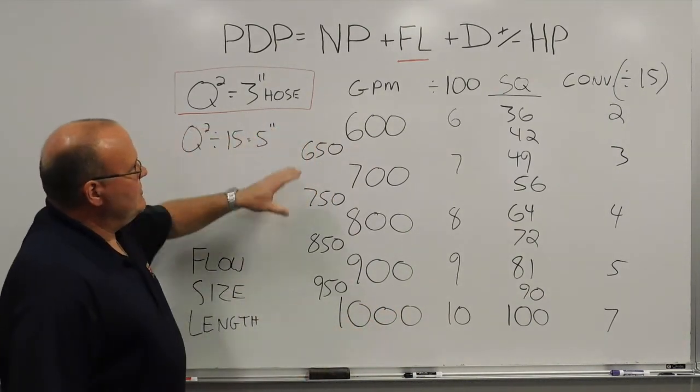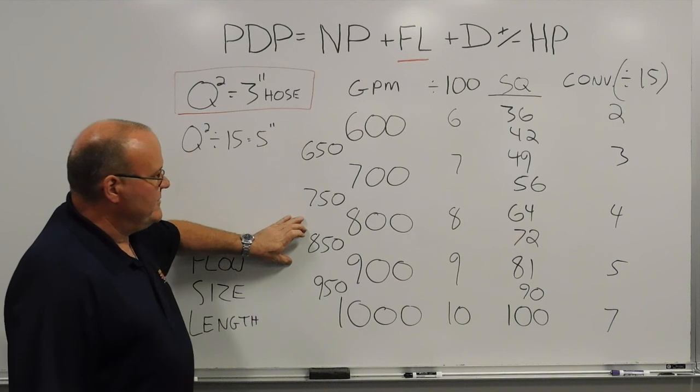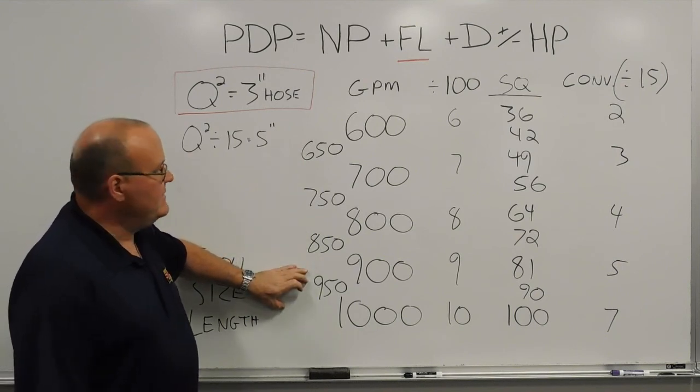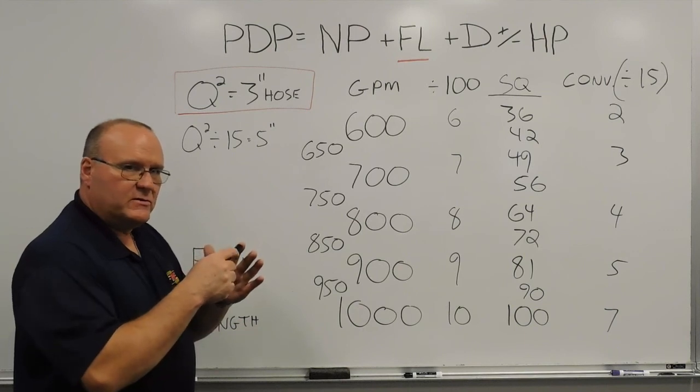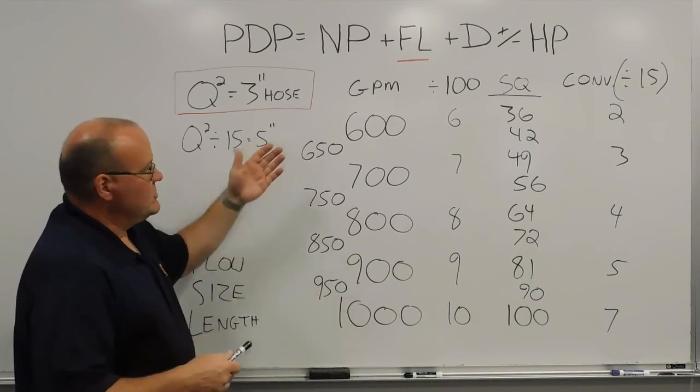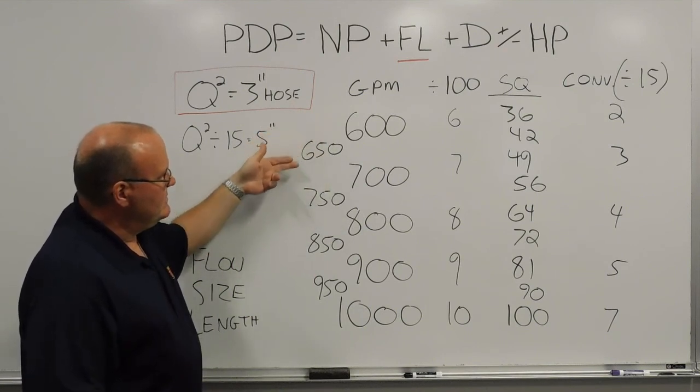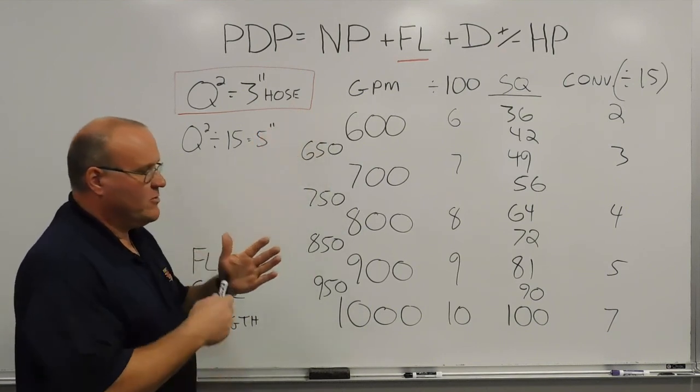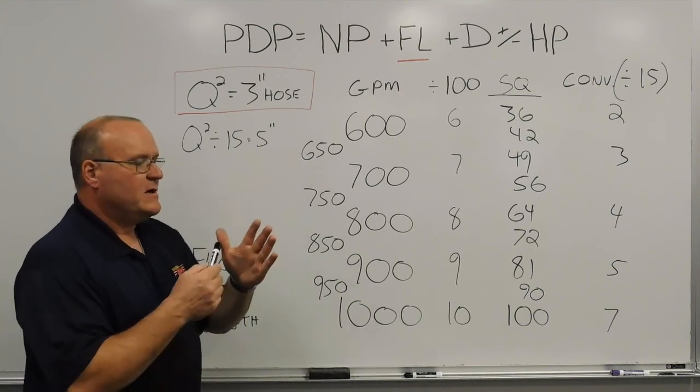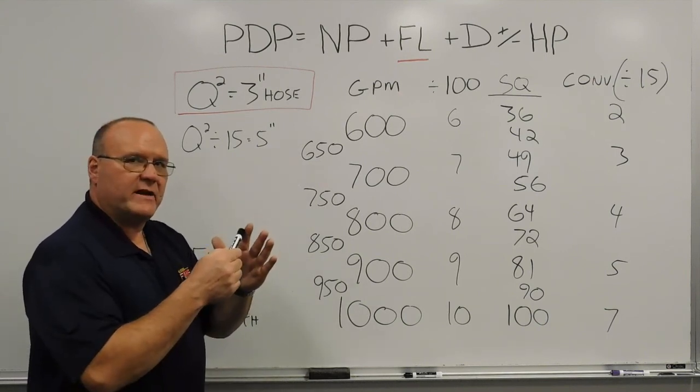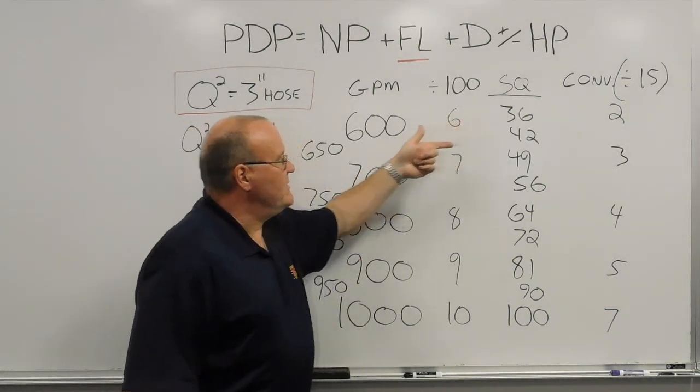When we go back to our in-between numbers, 650, 750, 850, or 950 gallons a minute, using our hand method, we can't just go square the number. So our shortcut on the hand method is to come across wherever that in-between number falls, you cross-multiply on those two fingers. So 650 gallons a minute falls between 600 and 700 gallons a minute. 6 times 7, I have 42 pounds of friction loss if it were 3 inch hose.